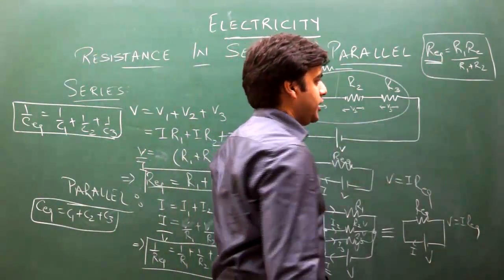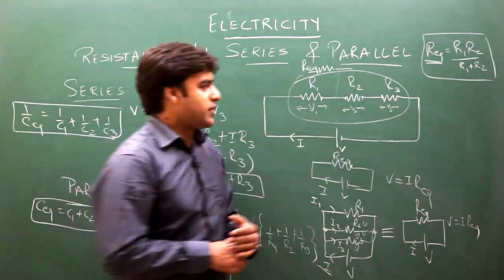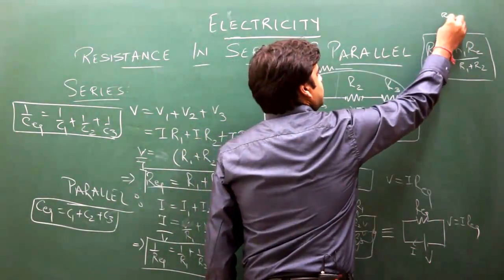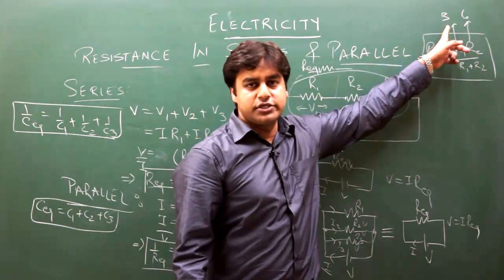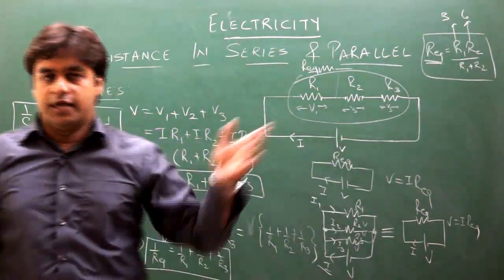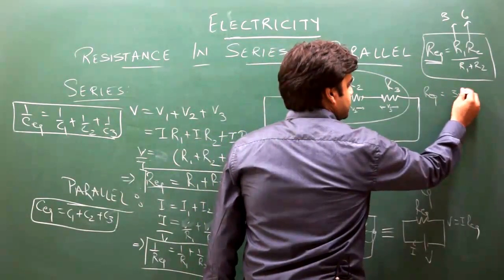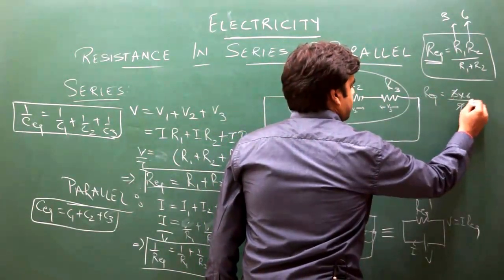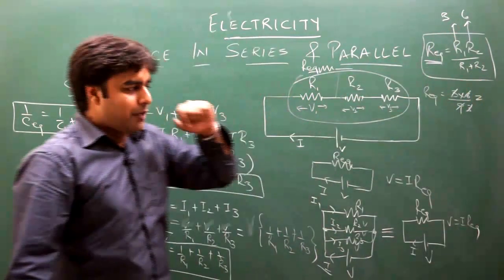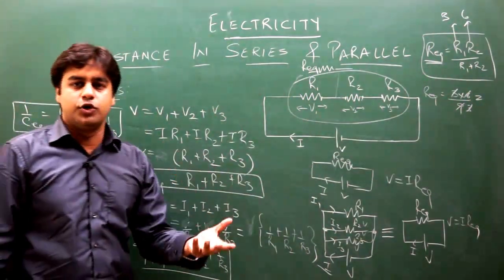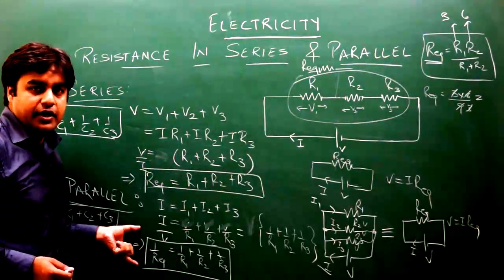An important point: in parallel, R_equivalent will always be lower than the lowest value among the resistances. For example, if you have 3Ω and 6Ω in parallel, R_equivalent = (3×6)/9 = 2Ω, which is lower than 3Ω. Similarly, for capacitors in series, the effective capacitance will be lower than the lowest value.